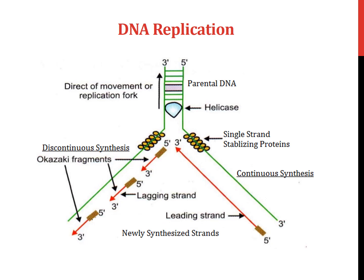To answer this, recall two rules from the beginning of the presentation. Rule 1: DNA synthesis occurs in the 5' to 3' direction. Rule 2: anti-parallel orientation — if one strand runs in the 5' to 3' direction, the other strand runs in the 3' to 5' direction. In this diagram, the parental strand runs in the 3' to 5' direction and the new strand is formed in the 5' to 3' direction, following both rules correctly.